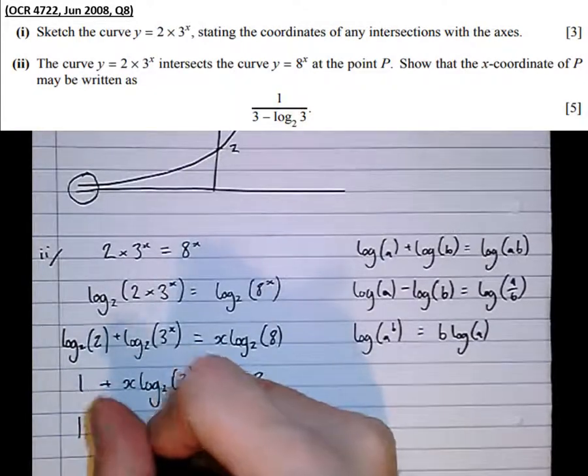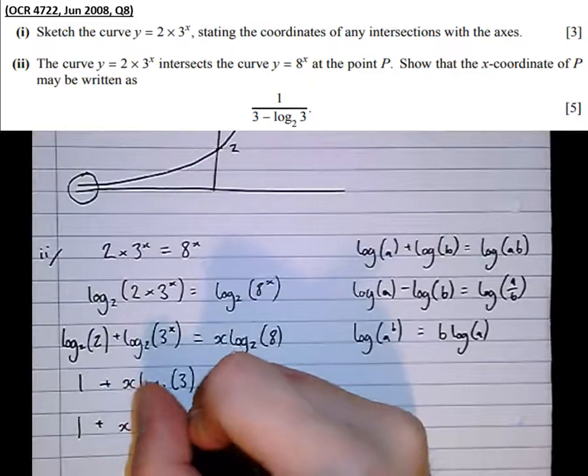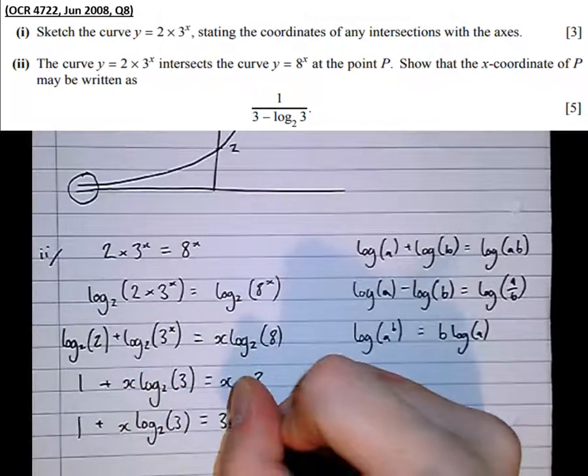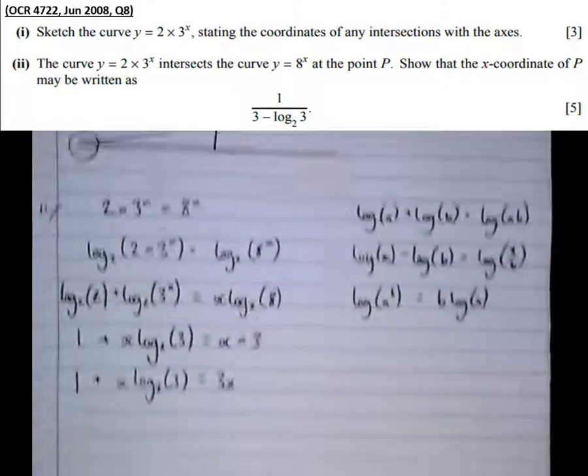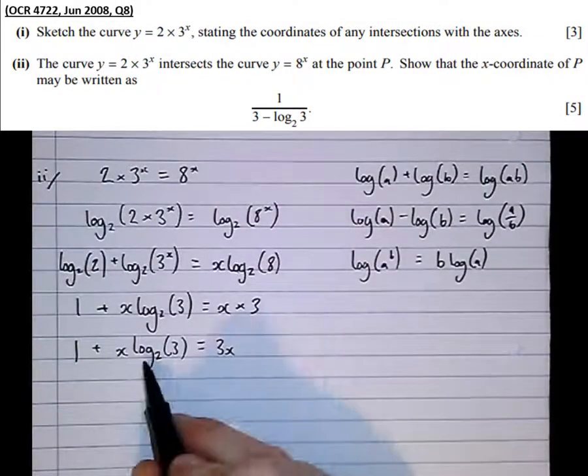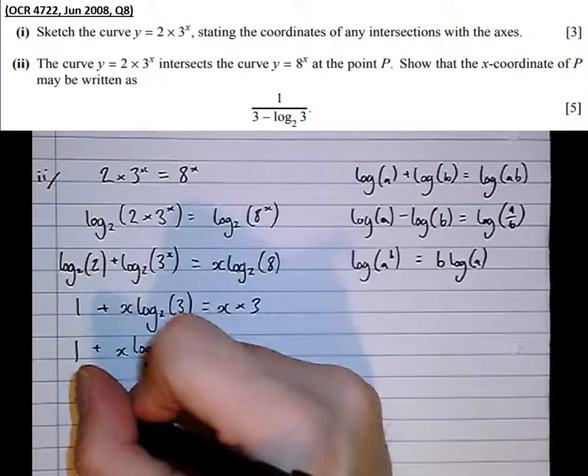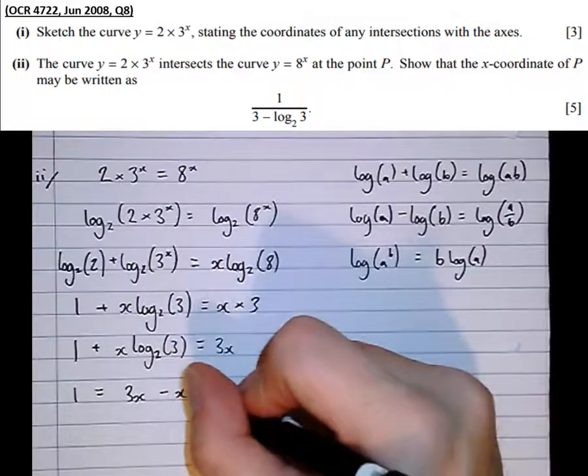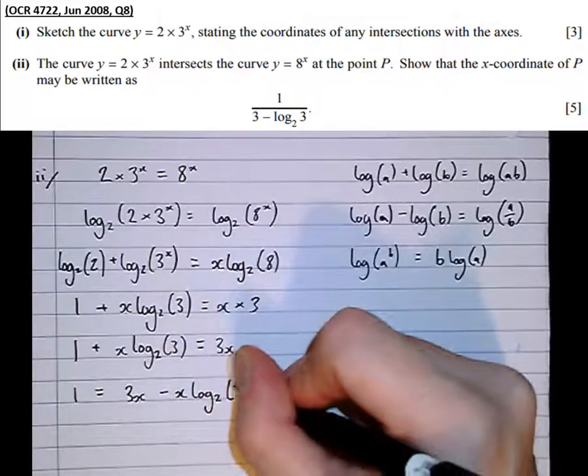So writing this line out again: 1 plus x log to the base 2 of 3 equals 3x. Getting closer. Now if I take to the other side this x log to the base 2 of 3, I get 1 equals 3x minus x log to the base 2 of 3.